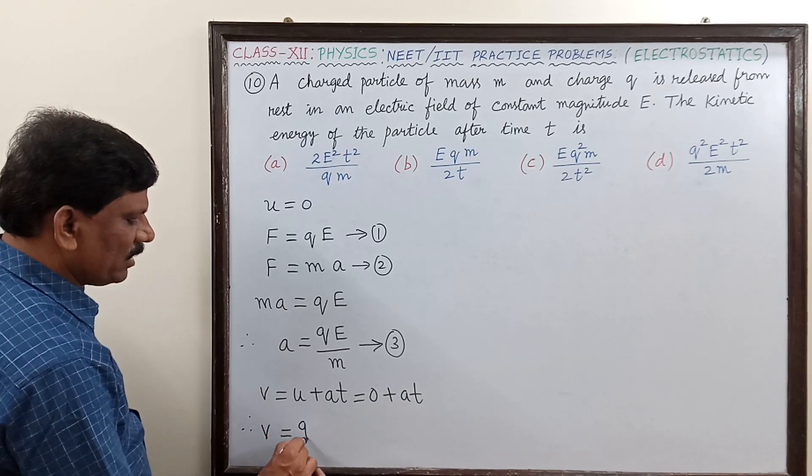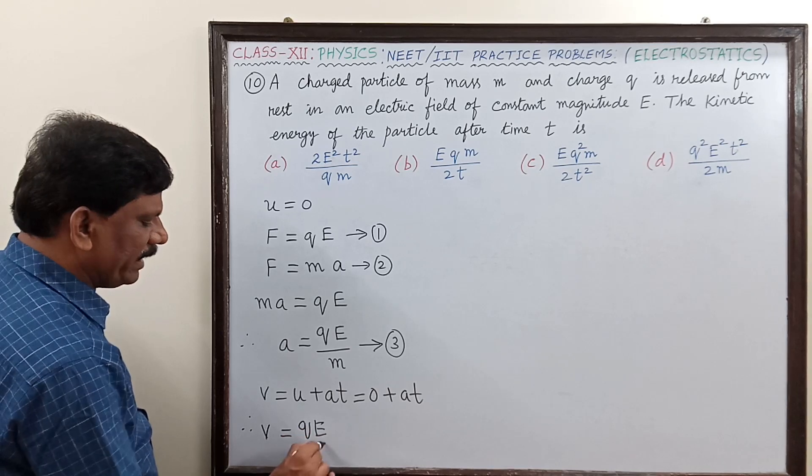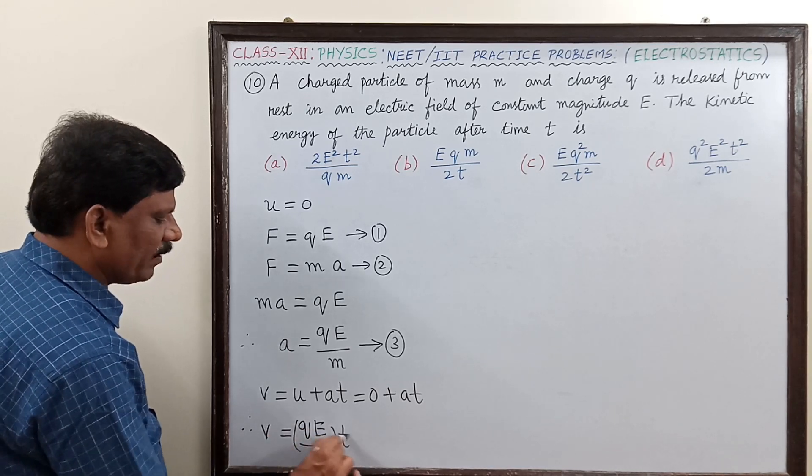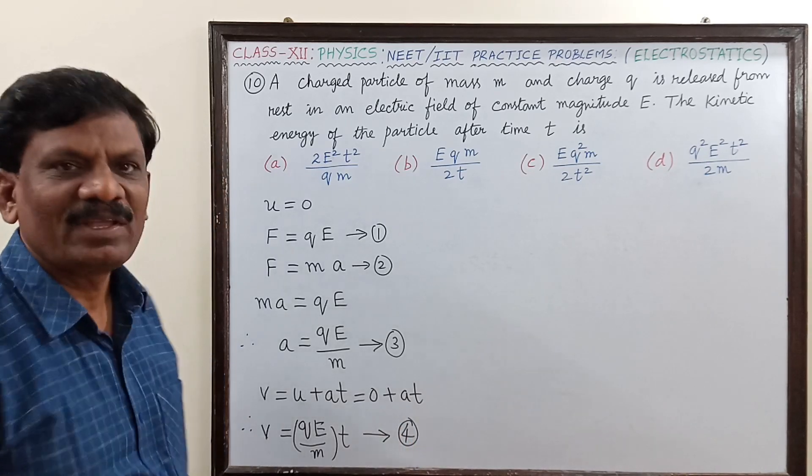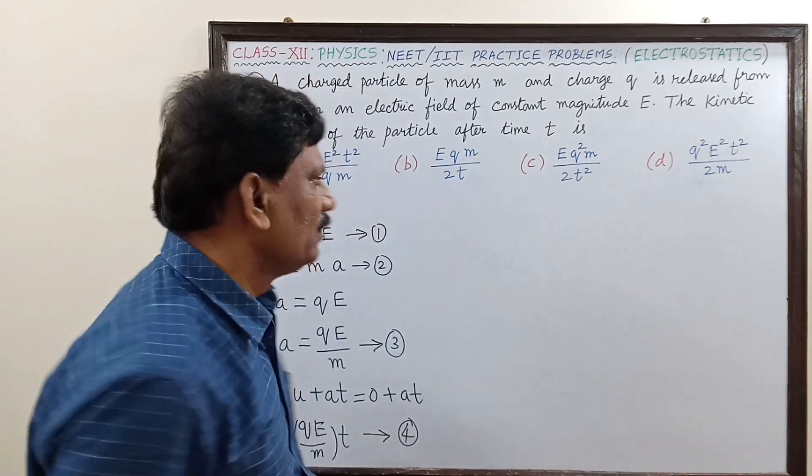So that is qE by m into t. This is equation four. Now we have to find the kinetic energy.